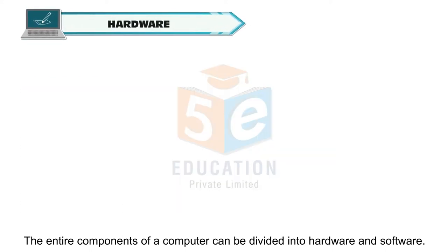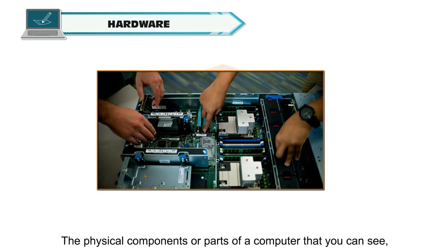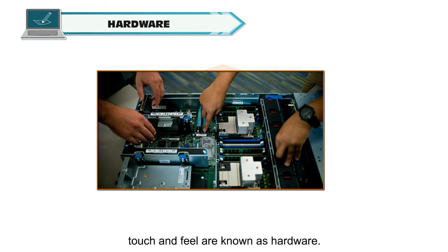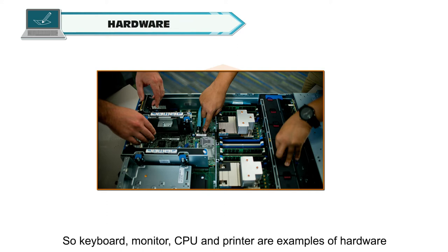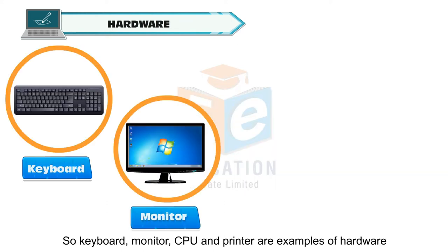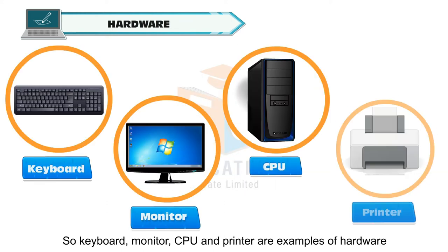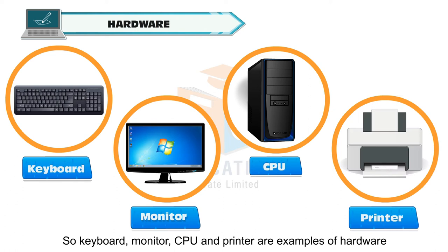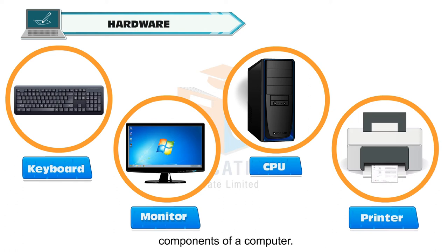The physical components or parts of a computer that you can see, touch and feel are known as hardware. Keyboard, monitor, CPU and printer are examples of hardware components of a computer.